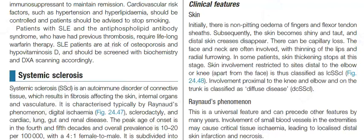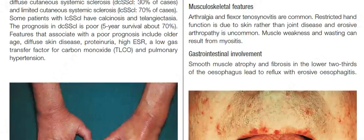Involvement proximal to the knee and elbow and on the trunk is classified as diffuse cutaneous systemic sclerosis. Raynaud's phenomenon is a universal feature and can precede other features by many years. Involvement of small blood vessels in the extremities may cause critical tissue ischemia, leading to localized distal skin infarction and necrosis.